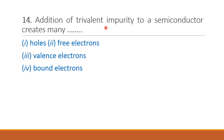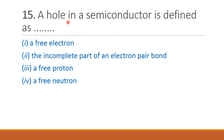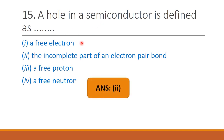Next question: addition of trivalent impurity to a semiconductor creates many — trivalent means 3 valence electrons, and our semiconductor has 4, so there is a vacant position or holes. Therefore option 1 is the right answer. Next question: a hole in a semiconductor is defined as — a free electron, the incomplete part of an electron pair bond, a free proton, or a free neutron. A hole is the incomplete part of an electron pair bond, which is the vacant position created by an electron. Therefore option 2 is the right answer.